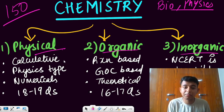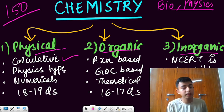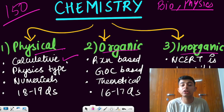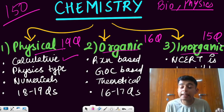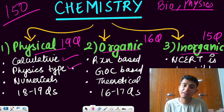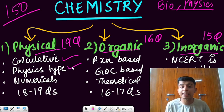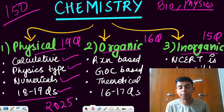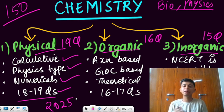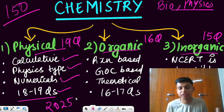Physical chemistry is very calculative, it means you need to do calculations. Even in this year NEET, physical chemistry dominated with 19 questions, organic chemistry had 16 questions, inorganic had 15 questions. It is physics type - the way you study physics, you have to study physical but it's way easier than physics. It contains numericals and you can expect 18 to 19 questions in NEET 2025 from here because chapters are very important. You have high weightage chapters: thermodynamics, equilibrium, electrochemistry, solutions.